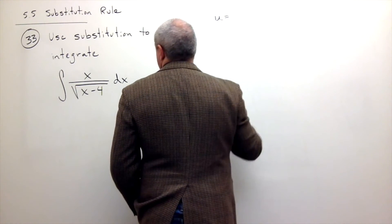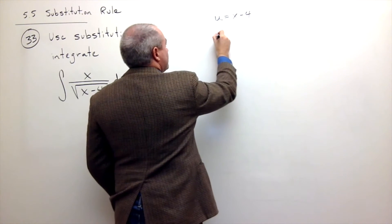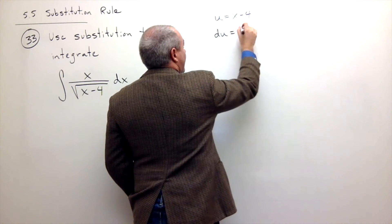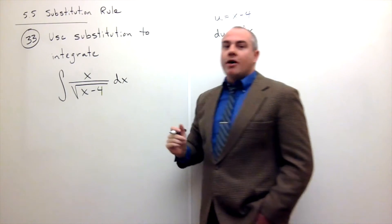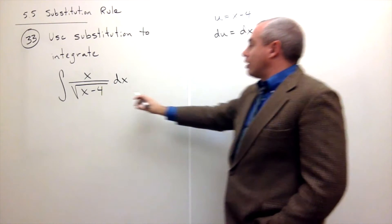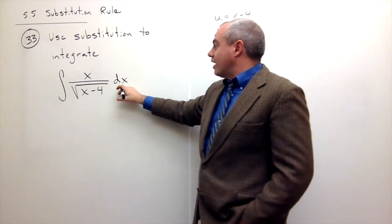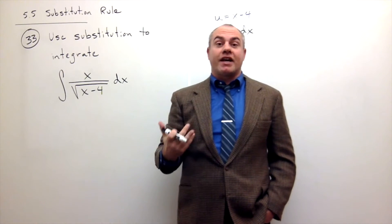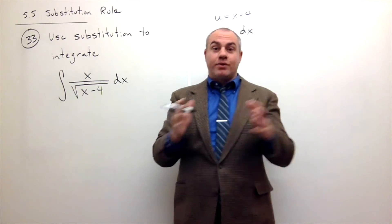So u equals x minus 4. Now when we ask what's the derivative of u, we get 1 dx, or du is just dx. Well, there's a problem here because if I substitute u for x minus 4, I get a u down here. And if I substitute du for dx, I get a du right here. But I still have this x hanging out on top and I haven't substituted for the x at all. That's extremely bad.